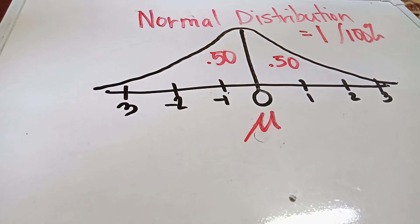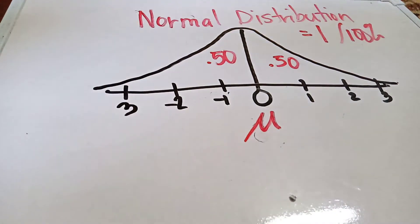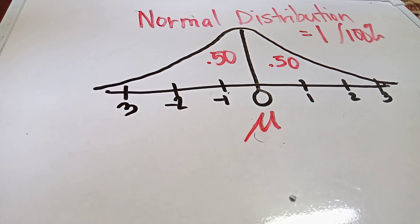Before we proceed further, note that there are values associated with different parts of the curve. In many textbooks, you can find a table called the z-distribution table or the normal distribution table — it is usually found in the back of the book. There are two ways these tables are presented, and I will show you the one most commonly found.